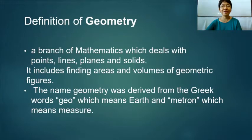So let's start with the definition of geometry. Geometry is a branch of mathematics which deals with points, lines, planes, and solids. It includes finding areas and volumes of geometric figures. The name geometry was derived from the Greek words geo, which means earth, and metron, which means measure.